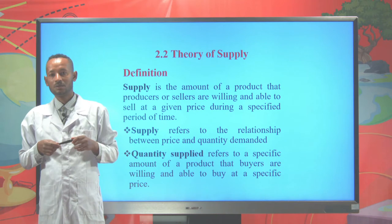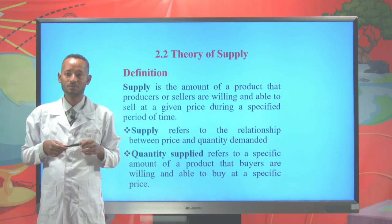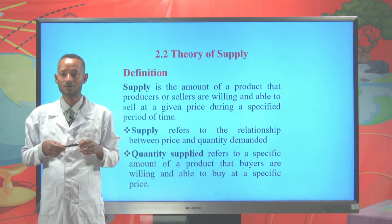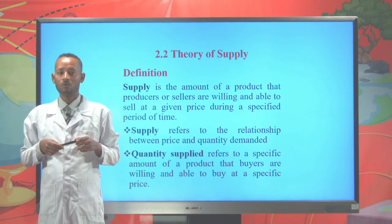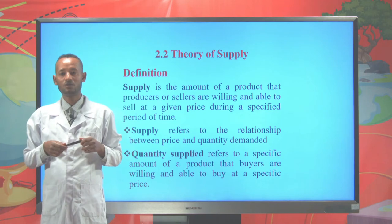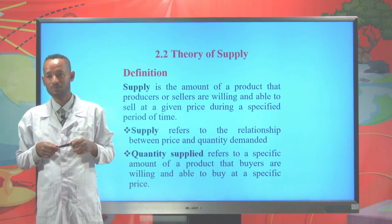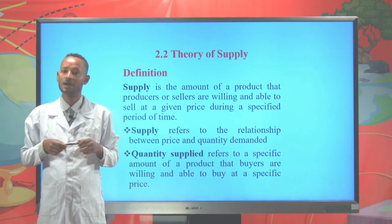Supply and quantity supplied are two different concepts. Supply refers to the relationship between the price of a commodity and quantity supplied, while quantity supplied refers to a specific amount of a product that producers or sellers are willing and able to sell at a specific price.